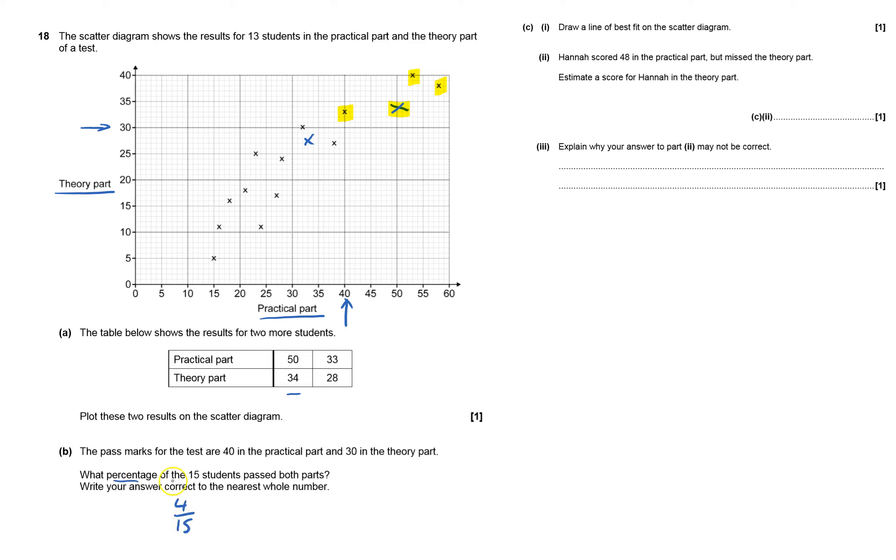And lots of working out percentage. Fraction times that by 100 and the answer will be in percent, and that gives me 26.666. And it's got to be correct to the whole number, so that will be 27 who passed.